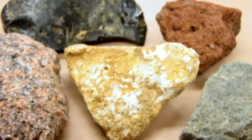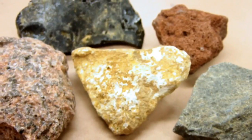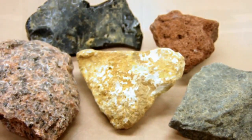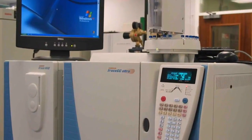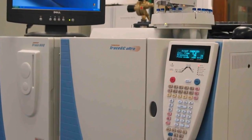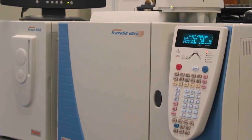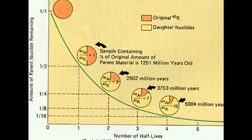Often potassium-40 is erupted from volcanoes and is part of the pyroclastic material sent up into the atmosphere. It then cools and forms igneous rocks, and bit by bit, within those rocks, the gas argon forms through radioactive decay. Knowing the half-life of potassium-40, we can then measure the argon gas in the rocks using a mass spectrometer and estimate the date when the rock was formed. The more argon gas present, the older the rock sample.